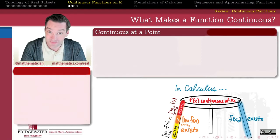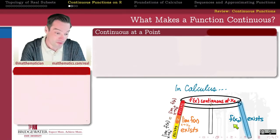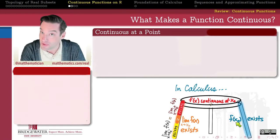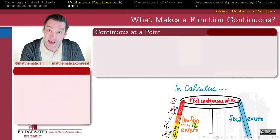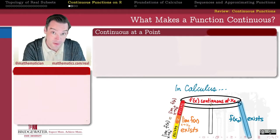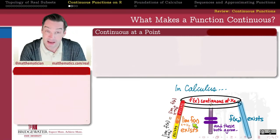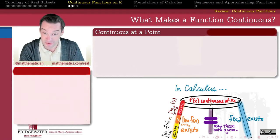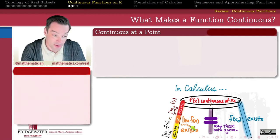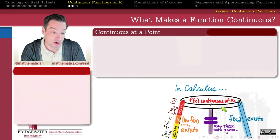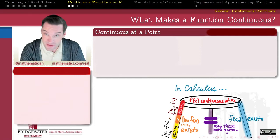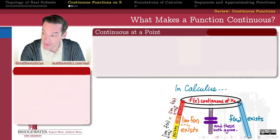But what is the third leg of the continuity stool? We need the value of the function at x₀ to exist, we need the limit of the function as x approaches x₀ to exist, but we also need those two things to be telling us the same story. We need the limit of f as x approaches x₀ to agree with the value f(x₀). The story being told by nearby points in the domain to x₀ is the same as the story being told by the very point x₀. This is typically how we understand what continuity means from a calculus perspective.